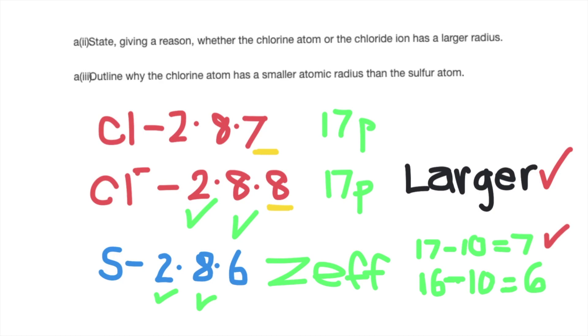Therefore the one with eight, which is Cl-, would have a slightly larger atomic radius. This is the case if you check the literature. You would see that the chloride ion has a slightly higher atomic radius than the chlorine atom.